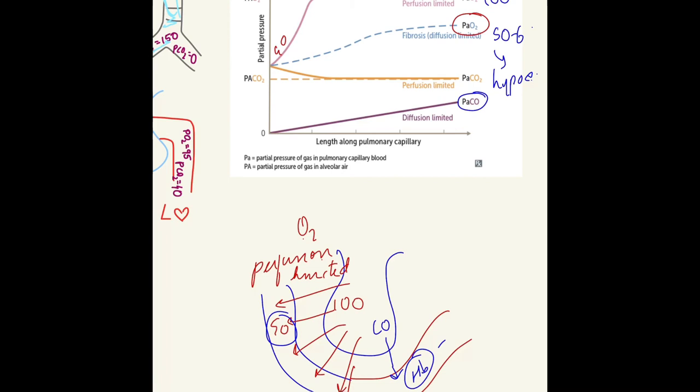Diffusion limited is seen in restrictive diseases like fibrosis and emphysema, and during exercise for oxygen. It's also seen for carbon monoxide. Whereas perfusion limited means that to increase diffusion, you need to improve blood flow, which is seen for oxygen and carbon dioxide normally.